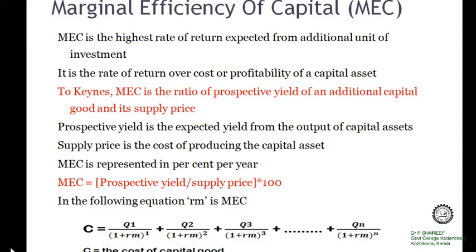Here, C stands for the cost of the capital good. Q1, Q2, etc., and Qn stand for the prospective yields in various years 1, 2, 3, and so on.